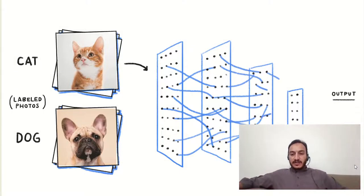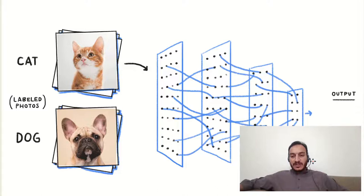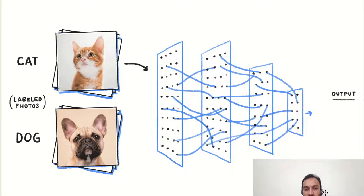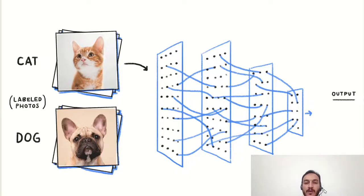If you talk about the machine learning process, we get raw data or a raw dataset, then we extract the features, and then those features are fed to a classification or regression model.